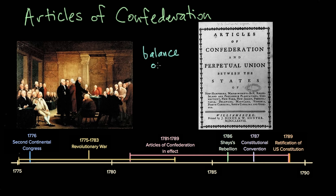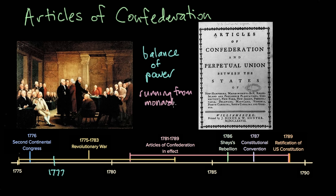When the Articles of Confederation were first created, it was in the middle of the American Revolution. They were created in 1777. The question becomes, how can we run a government that looks as different from monarchy as possible? They're trying to run away from the past and create a separate government that doesn't have any of those abuses. If they're running away from a monarchy, what they're running towards is what we would call a limited government. So their central government, which is synonymous with a federal government, is actually really, really small. They don't have an executive branch. They only have Congress.